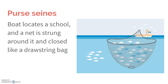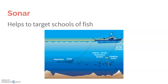Purse seines work by locating a school of fish, throwing out a giant net around them, and then drawing it closed — kind of like a drawstring bag — before pulling it on board. Sonar has also helped increase the amount of fish caught because fishermen can now use sonar to find schools of fish and catch them all at once, eliminating the time spent waiting and searching for fish.